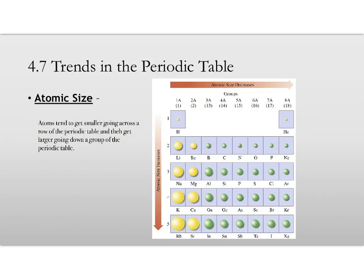All right, section 7 of chapter 4 is trends in the periodic table, and what this means is like, how, if we look at a periodic table, does this specific property change going across a row of the periodic table or going down a group of the periodic table? Is there a pattern that is repeated? And almost always there is a pattern.